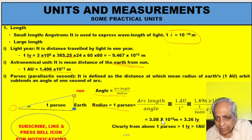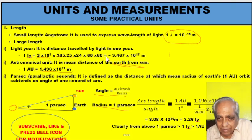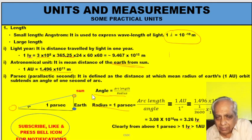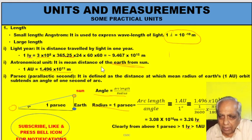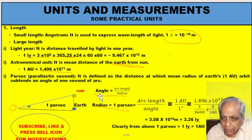So 1 parsec is approximately 10 raised to 16 meters. To compare: 1 AU is 10¹¹ m, 1 light year is 10¹⁵ m, and 1 parsec is 10¹⁶ m — so 1 parsec is more than 1 light year. You should know these values and how they are defined.